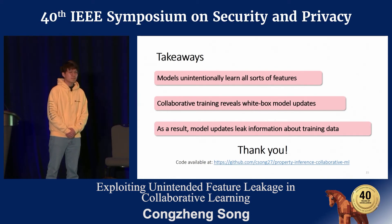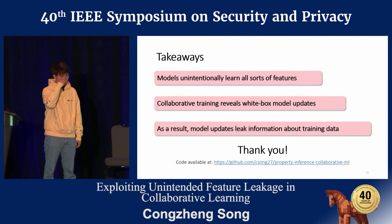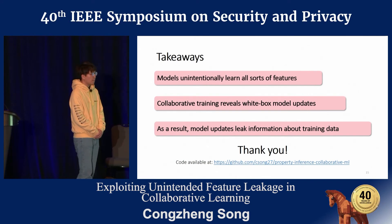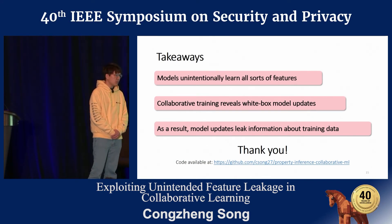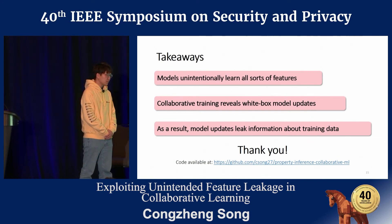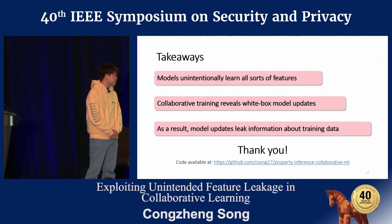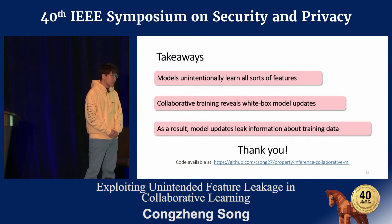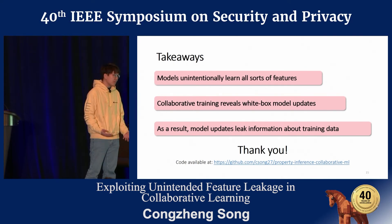Question: is there a relation to overfitting and generalization — it seems the updates carry a lot of overfitting information? The presenter responded: that could be one of the reasons. However, it's not quite overfitting in the traditional sense, because the model still performs well on test data and generalizes — but it still learns features along the way that can help infer other properties.